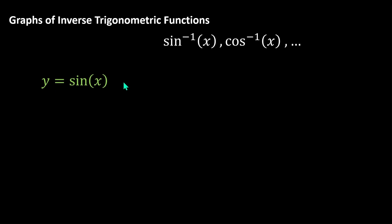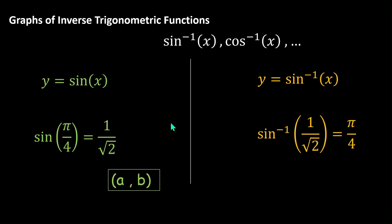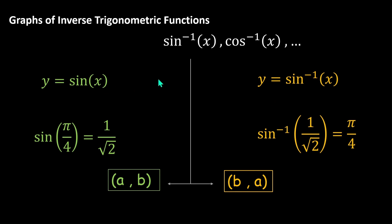For y = sin x, it takes in the value π/4 to give out the value 1/√2, because sin(π/4) = 1/√2. Whereas its inverse function y = sin⁻¹x takes in 1/√2 and gives out π/4. In general, if there's any point (a, b) satisfying y = sin x, then there must be a point (b, a) satisfying y = sin⁻¹x. Using this and knowing the curve of y = sin x, we'll try to plot y = sin⁻¹x.